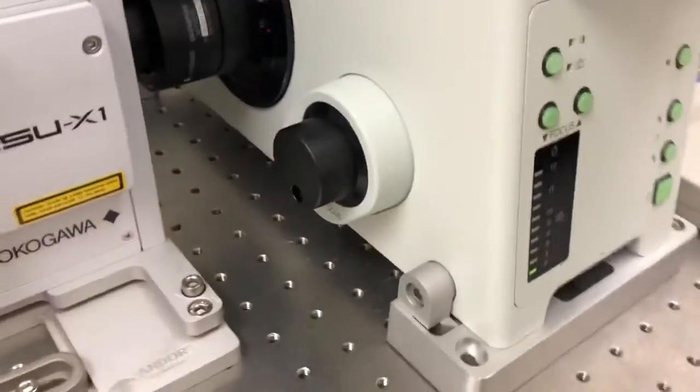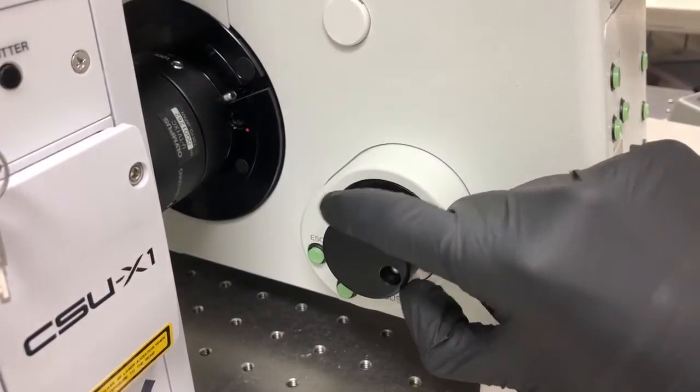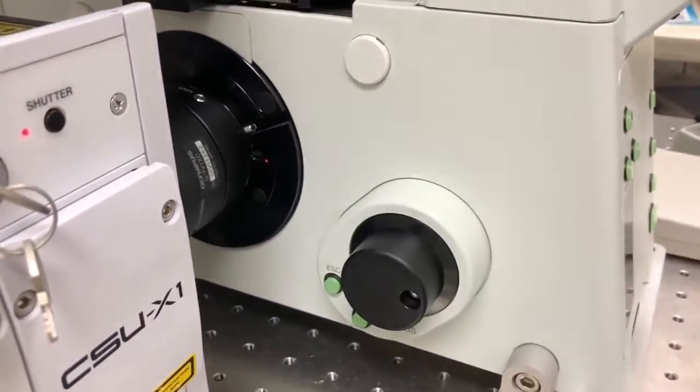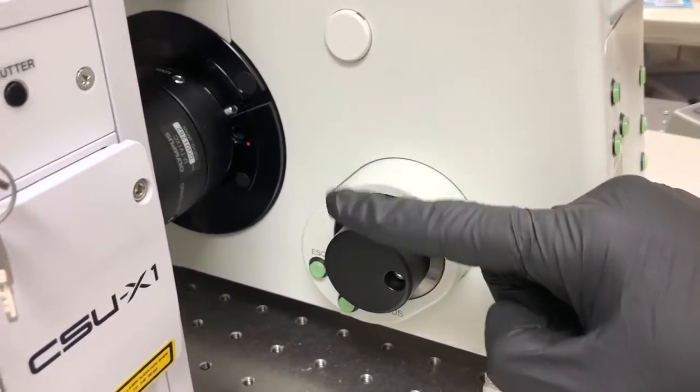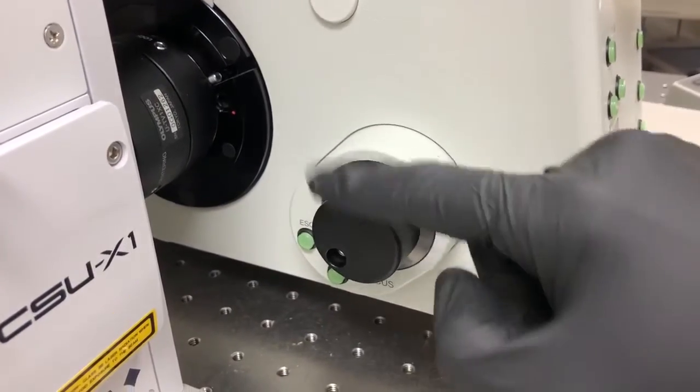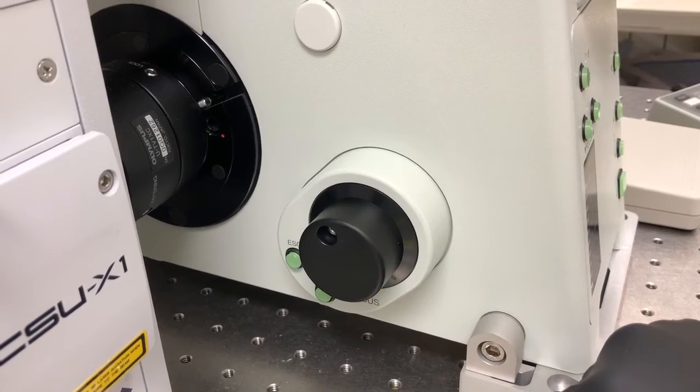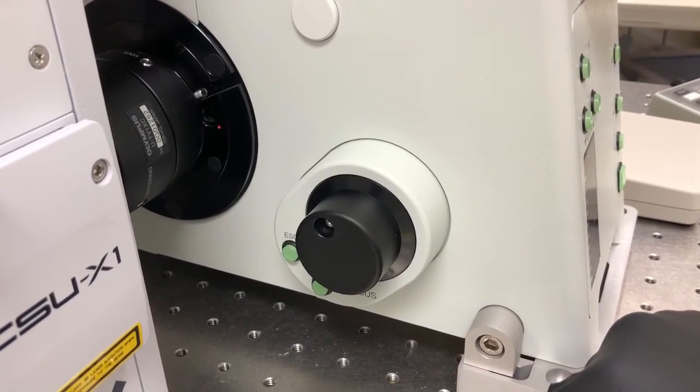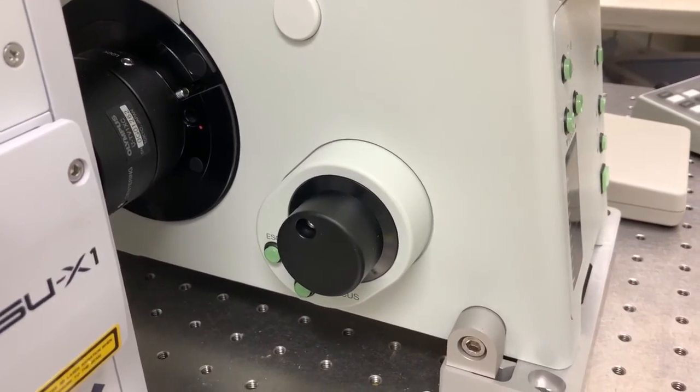This is an Olympus microscope. So on this kind of microscope, moving the focus knob away from you, so towards the wall, makes the objectives go down. Whereas moving it towards you makes the objective go up. This is exactly opposite to Zeiss microscope, so be careful if that's what you're used to.